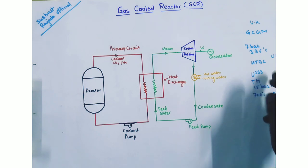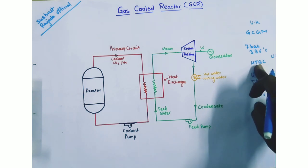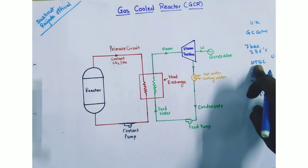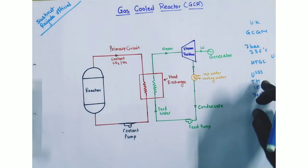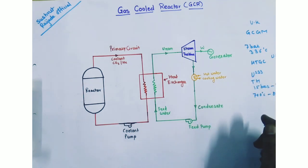Therefore, it is called HTGC, that is high temperature gas cooled reactor. HTGC may work up to a thermal efficiency of 40 percent.